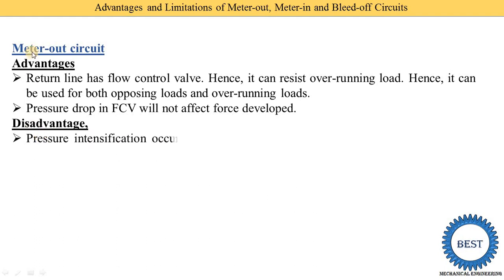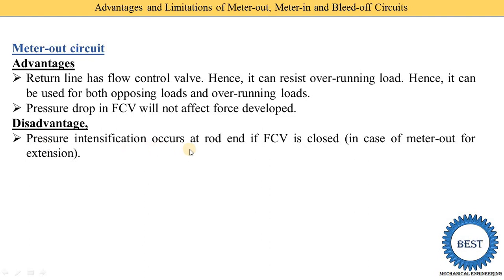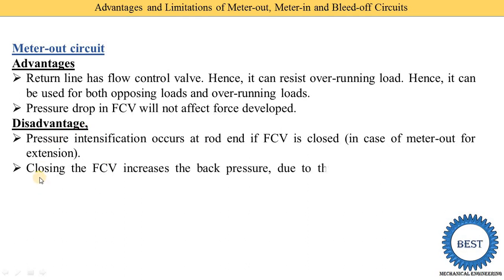Now, what are the disadvantages of the meter out circuit? Pressure intensification occurs at the rod end if the flow control valve is closed. During the extension stroke of the meter out circuit, if we close the flow control valve, pressure intensification occurs at the rod end. The second disadvantage: closing the flow control valve increases back pressure, and due to this, the net force developed will be reduced.